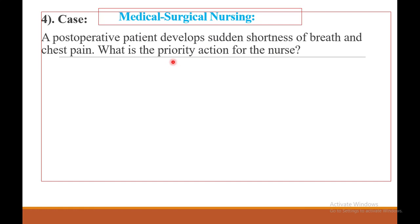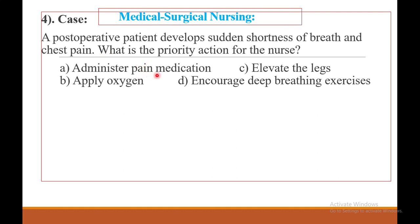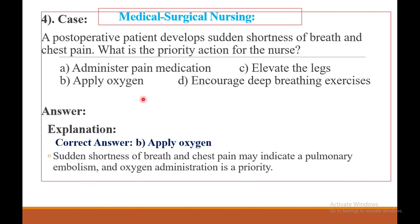The choices are: A — administer pain medication. B — apply oxygen. C — elevate the legs. D — encourage deep breathing exercises. When a patient experiences shortness of breath and chest pain, the nurse should immediately apply oxygen. The answer is B — apply oxygen.